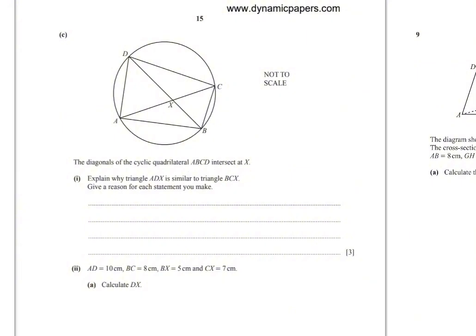Problem C. The diagonals of the cyclic quadrilateral ABCD intersect at X. Explain why triangle ABX is similar to triangle DCX. Give a reason for each statement you make. The two triangles are similar if the angles are equal, so to prove that they are similar, we need to prove that the angles are equal.